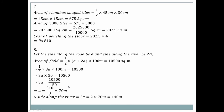Question number seven: Rhombus shape tile. Area = half × 45 × 30 = 45 × 15 = 675 square centimeters per tile.